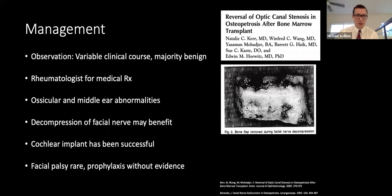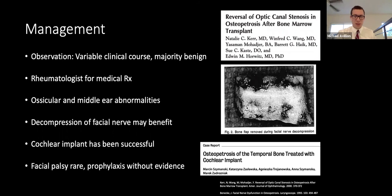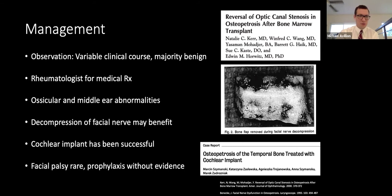Cochlear implantation has been successful: a 52-year-old female with osteopetrosis and profound bilateral hearing loss underwent implantation with a Cochlear Nucleus 5. Despite the extremely thick and dense bone, her speech recognition at six months post-surgery was 75%, with stable results at three years. There is no evidence supporting prophylactic decompression of the facial nerve.